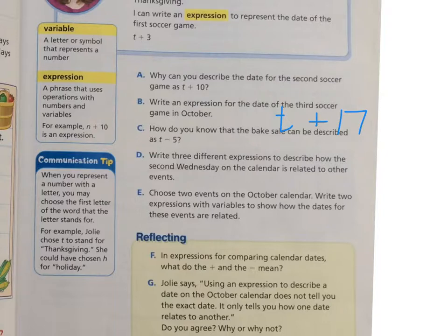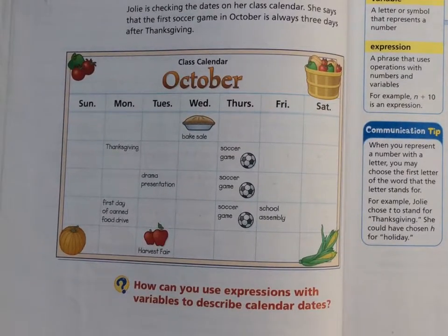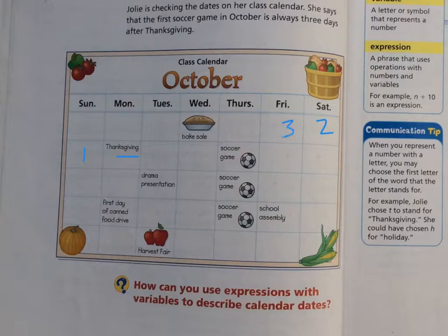Now let's get to letter C: How do you know that the bake sale can be described as T minus 5? If we count the days backwards — Thanksgiving is right here — we've got one day, two, three, four, five. So Thanksgiving is T, and if you take away five days, you get your first bake sale.